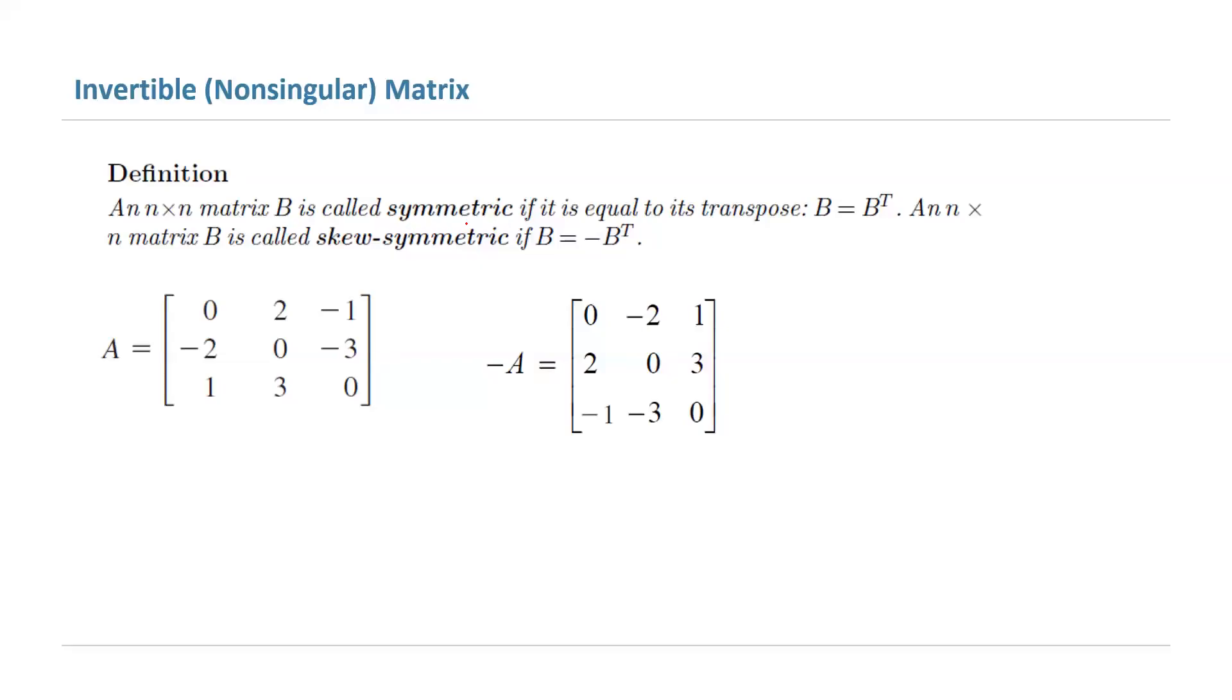The definition of a symmetric matrix is the matrix is equal to its transpose. However, if the matrix is equal to negative its transpose, then you're going to call it skew-symmetric.